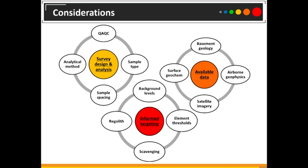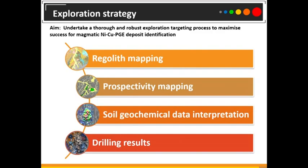For example, we basically get our soil sample results back and just go out chasing and drilling our high copper, or our high lead or zinc. The aim of this talk is to demonstrate a more thorough and robust exploration targeting process — the process undertaken to maximise success for magmatic nickel-copper identification, but it will be applicable to many different deposit types using different elements.